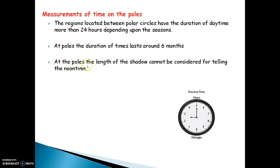At the poles, the length of the shadow cannot be considered for telling the noon time, because at the poles the shadow of the sun will be lesser since it lies on the extreme end of the earth.